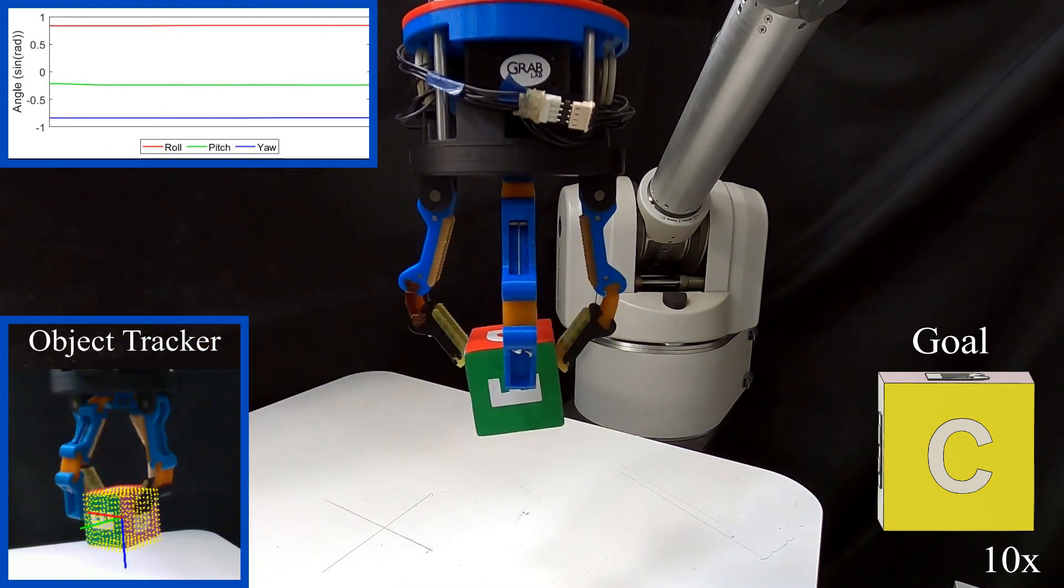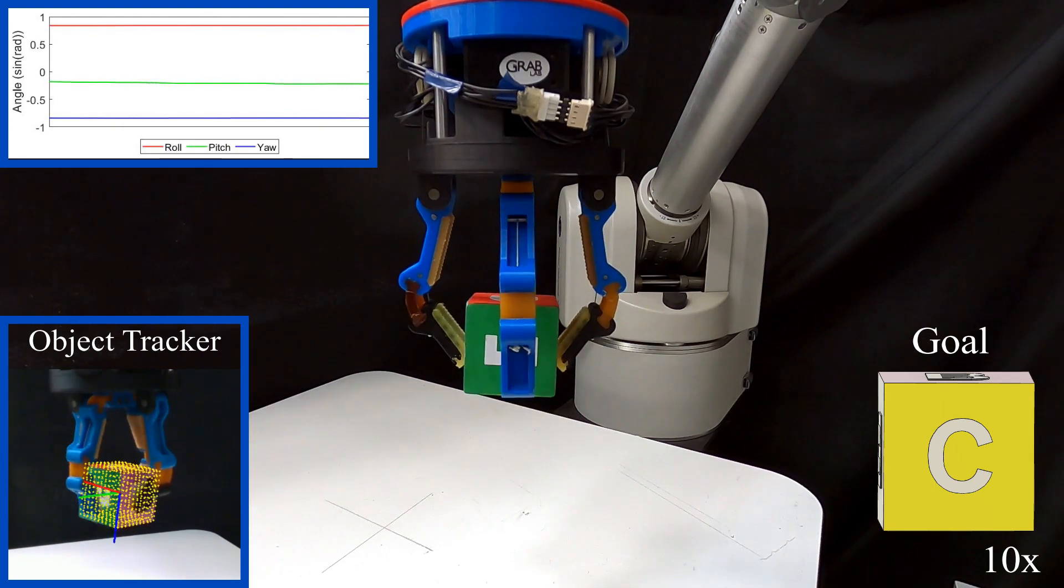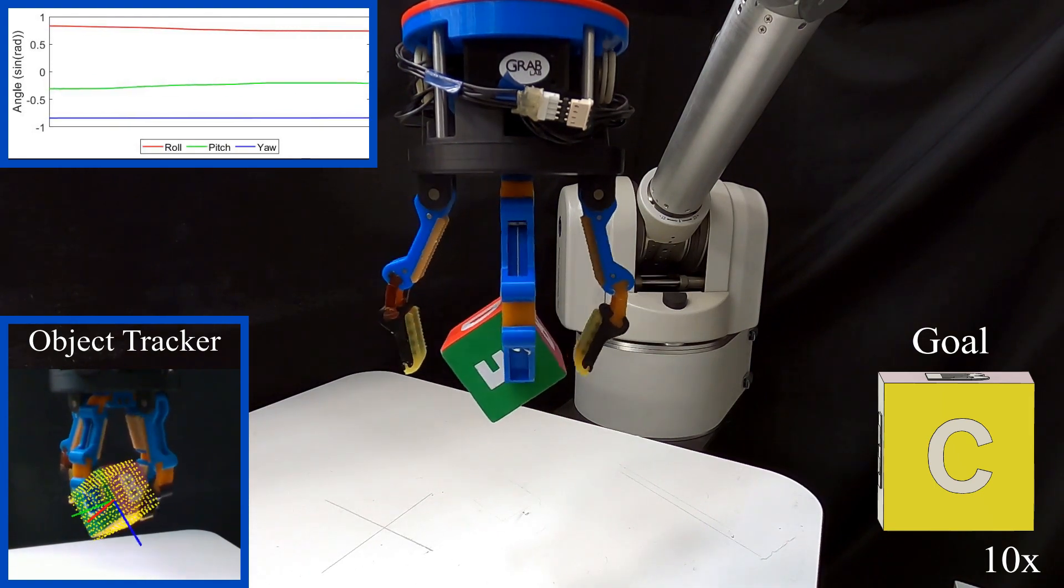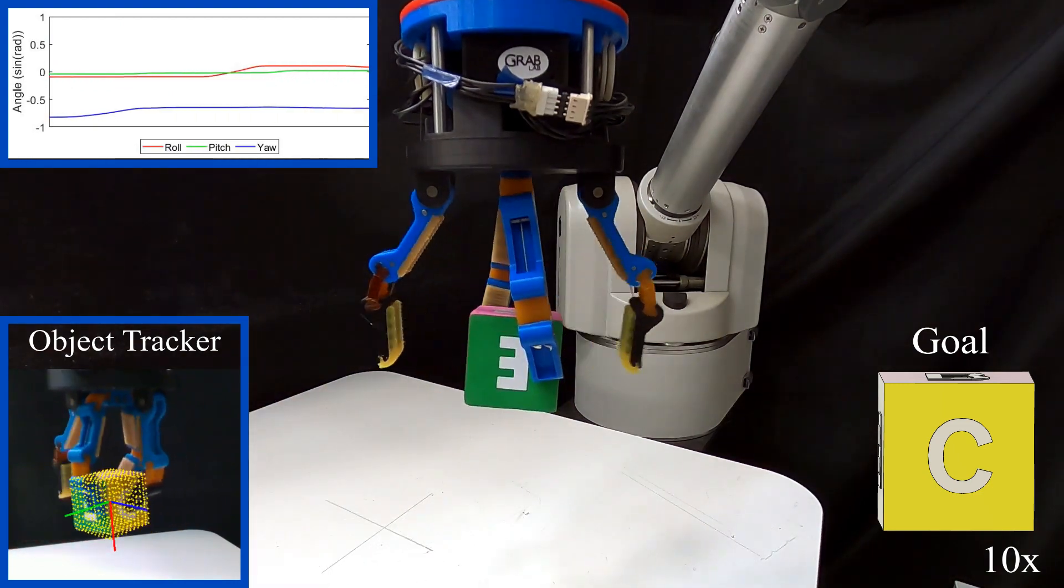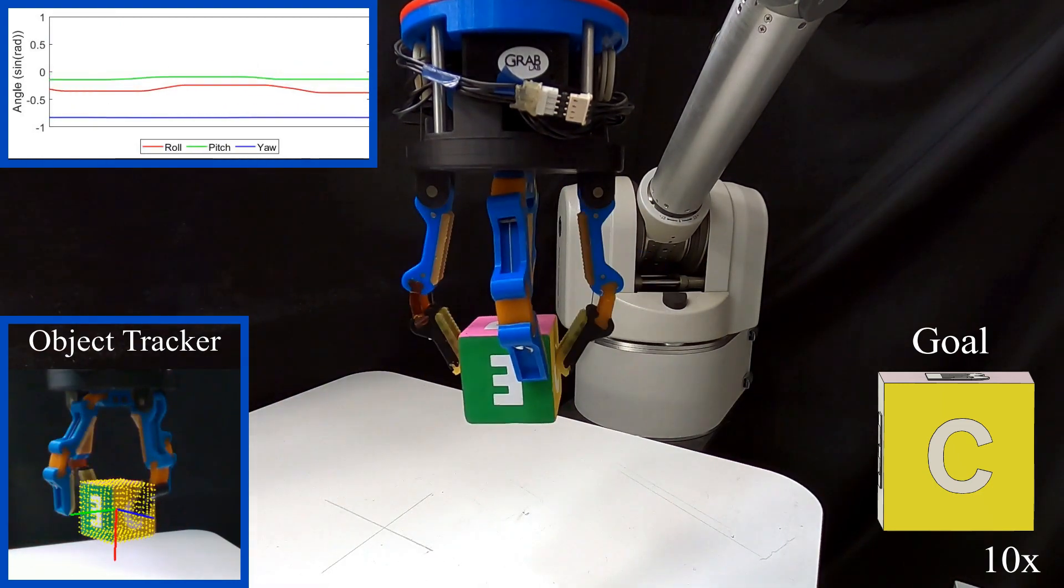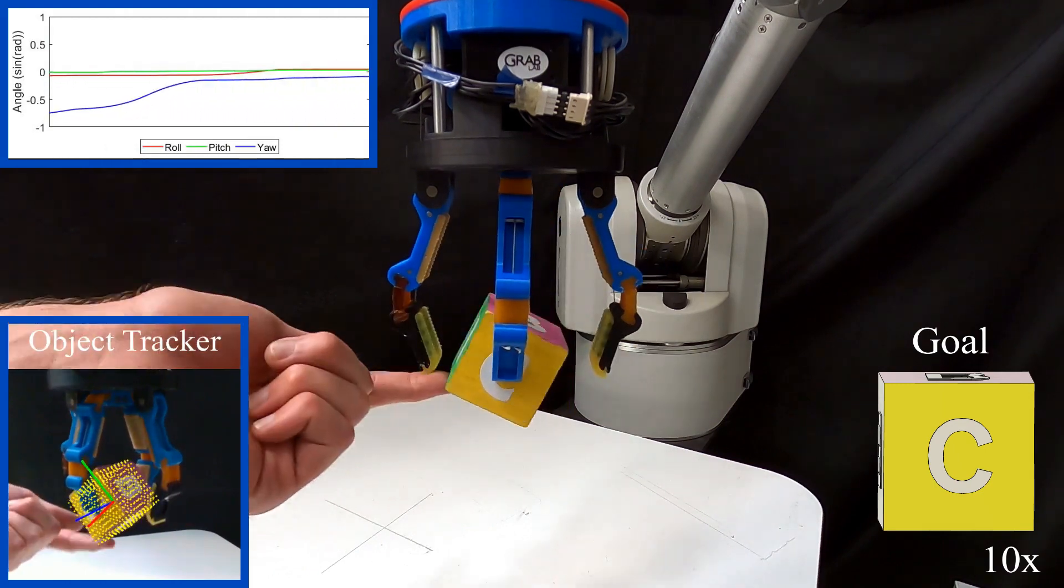Here, the rotation and translation of the object are both perturbed during the manipulation sequence. The planner must then adapt online and continue its control sequence accordingly. We showcase this ability by starting from cube face B and transitioning to cube face C.